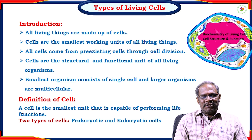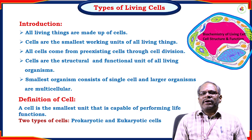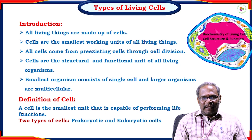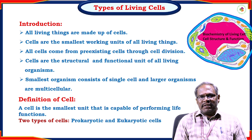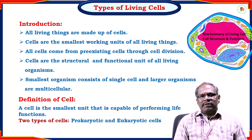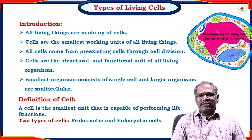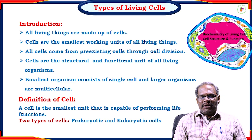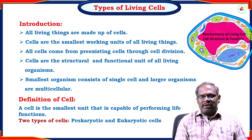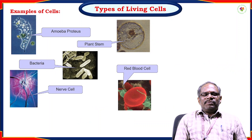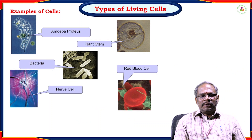The two types of cells are prokaryotic cells and eukaryotic cells. Prokaryotic cells include bacteria. Plant cells, animal cells, and liver cells are examples of eukaryotic cells. Definition of the cell: the cell is the smallest unit that is capable of performing life functions. The two types are prokaryotic and eukaryotic cells.